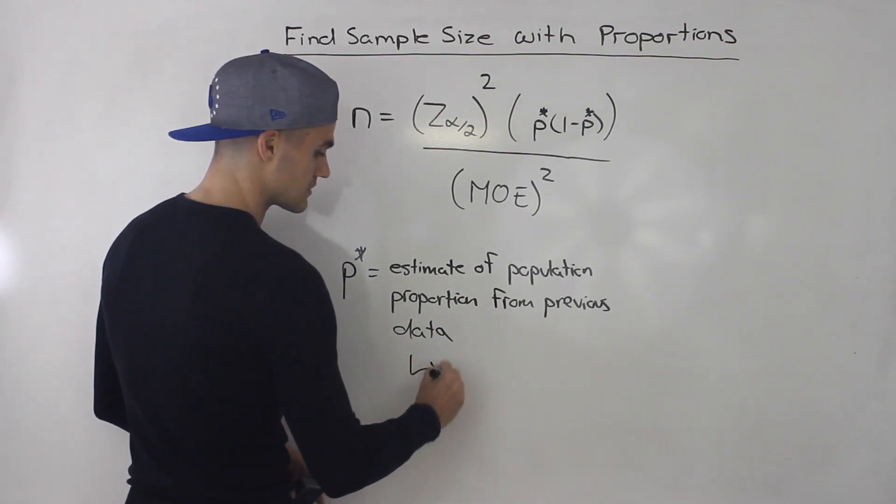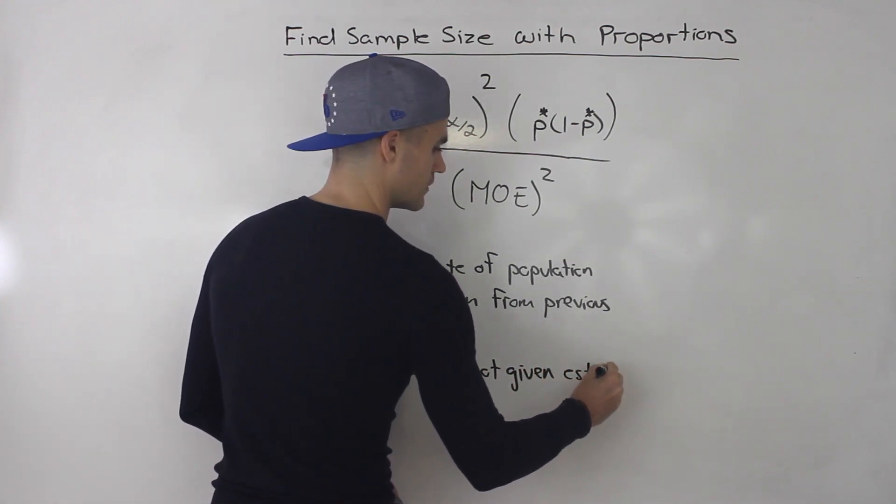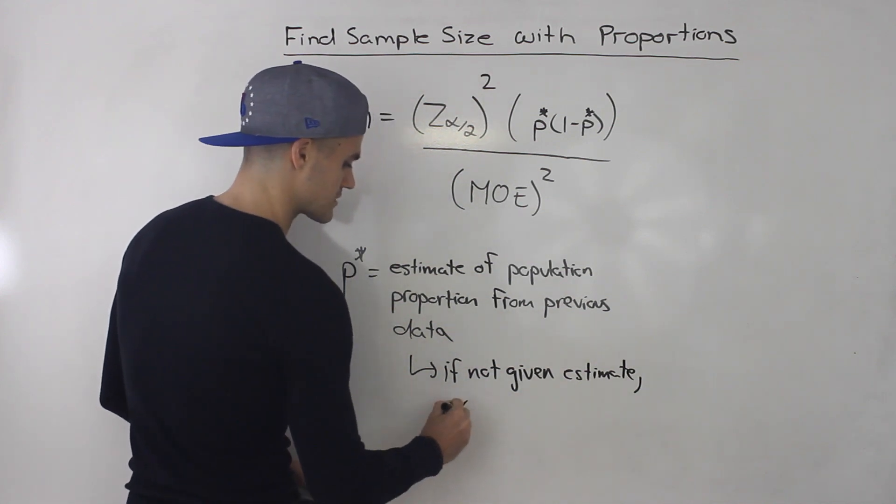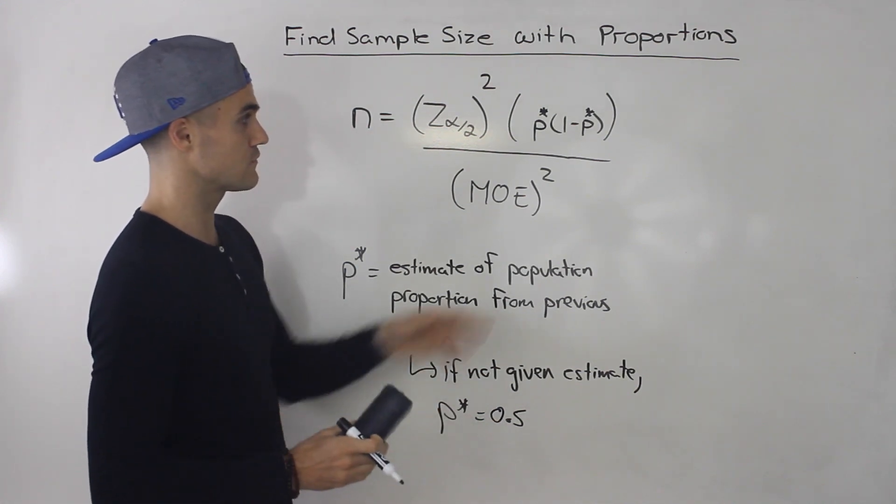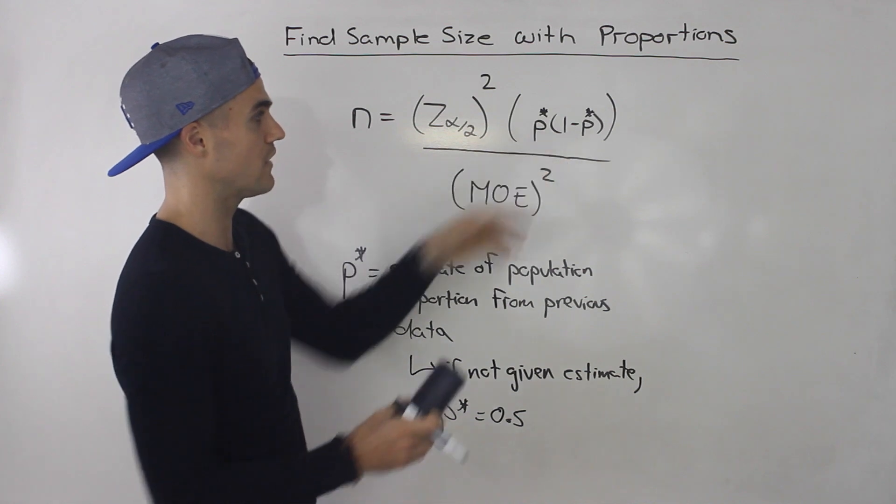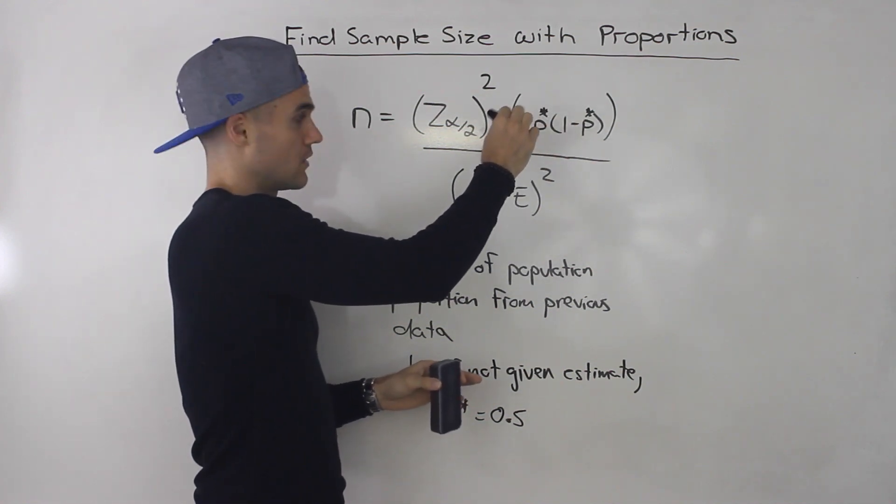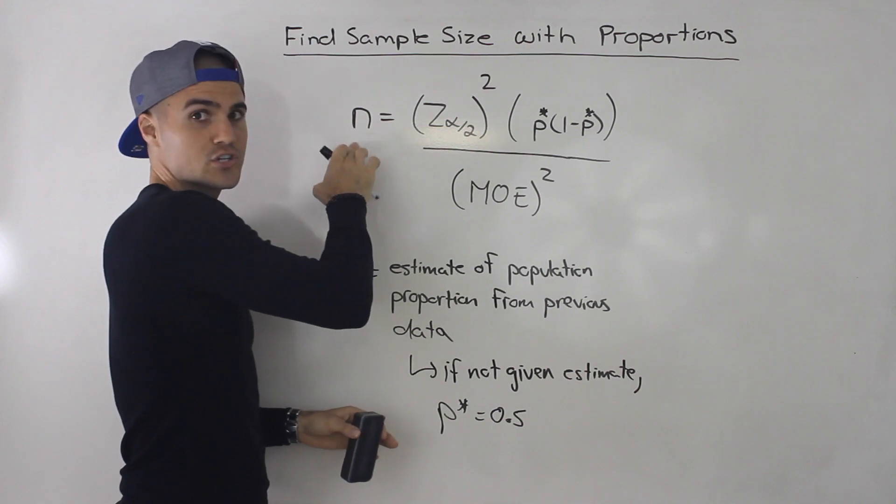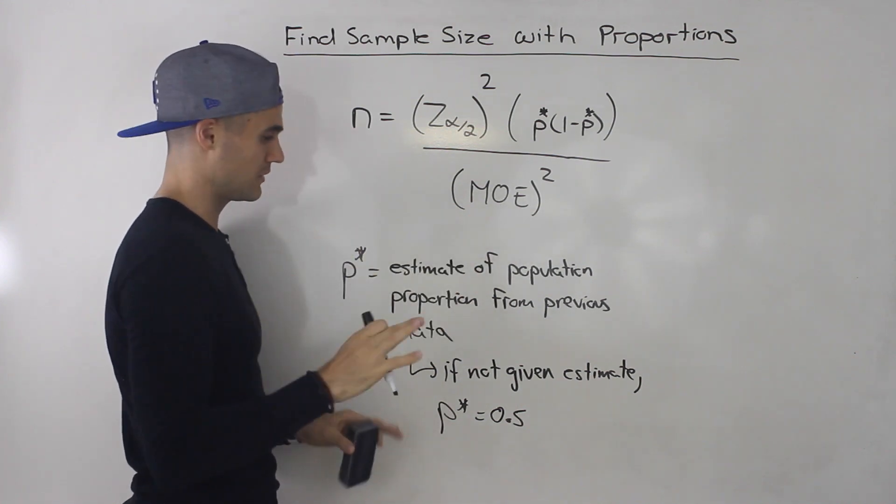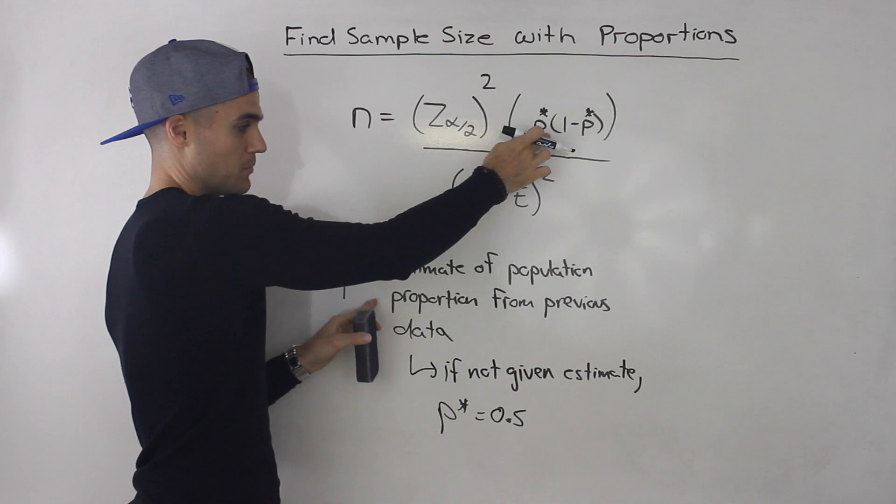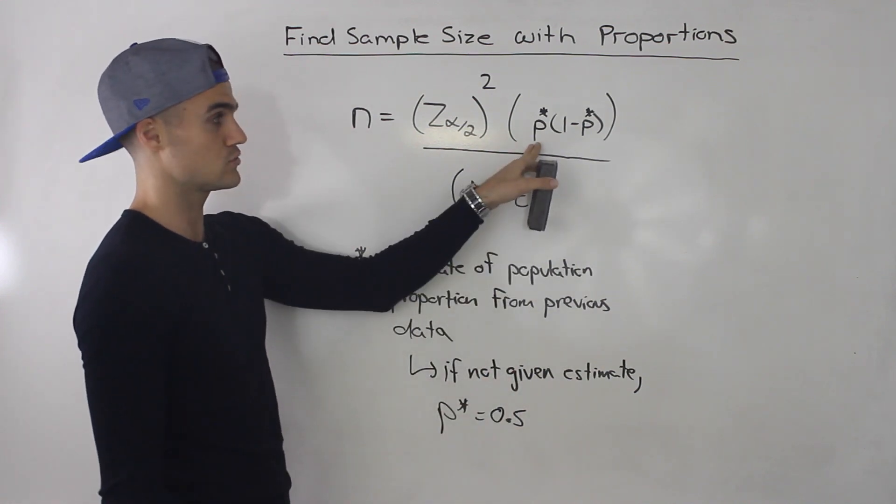Now, if you're not given this, if you're not given an estimate, then just let p star equal 0.5. The reason why is because 0.5, if you plug in 0.5 times 1 minus 0.5, this bracket is going to be as big as it can be. It's actually going to equal 0.25, and that's the largest number you could have there. So it's going to give you the largest sample size you have to get in order to have a certain margin of error. But don't worry about the technicals of that. Just remember, this is going to be the estimate of the population proportion from previous history. If you're not given an estimate, then just use 0.5 to plug in over there.